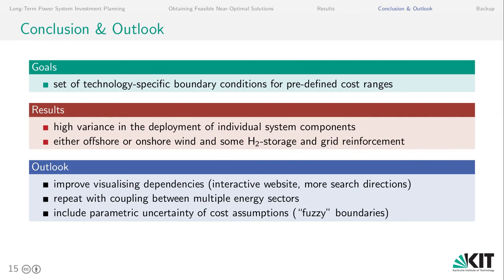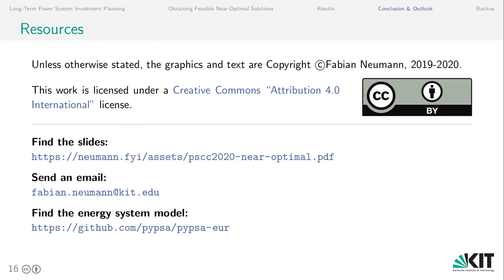Second, we could repeat this analysis when we couple all the other energy sectors with the power sector. Third, while this study looked at the structural uncertainty of the optimization problem, we could work on including also parametric uncertainty of cost assumptions. If you have a further interest in the open source energy system model that we use, visit the GitHub repository at github.com/pypsa/pypsa-eur.